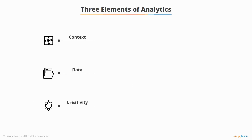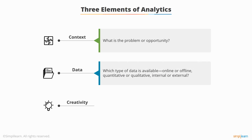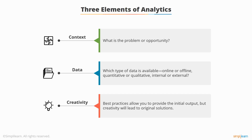There are three super important elements of analytics. The first one is context: what is the problem you're trying to solve, or what is the opportunity you're trying to capture? The second is data — you need data to understand what's going on, measure it, make sense of it, find patterns and correlations, and make recommendations that make sense. The third is creativity: you can't just look at your competitors and copy what they're doing. You need to be more creative in order to do better. There's a lot of room for creativity in analytics, both in how you conduct your analysis and how you make your recommendations.